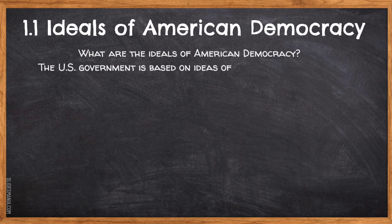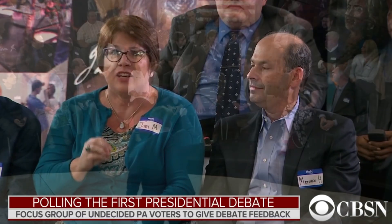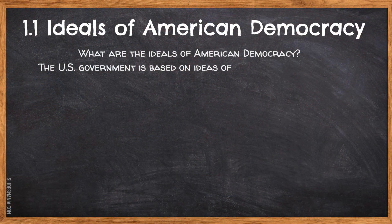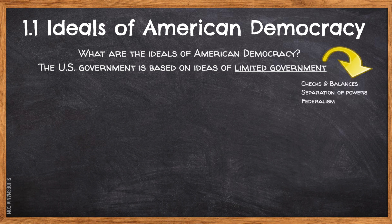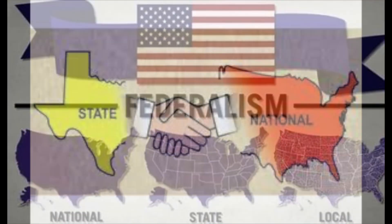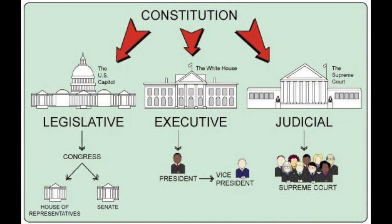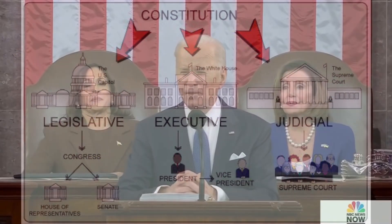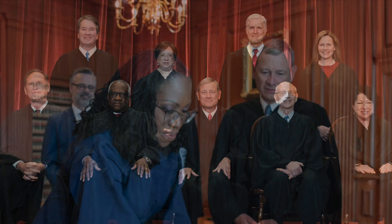So before we even begin a course on American government and politics, we have to understand: what are the ideals of American democracy? What is it that Americans fundamentally believe in? Well, the first thing is that the United States government is based on the idea of limited government — a system of separation of powers, with power divided between the federal and state governments, and a system of checks and balances, where government is divided into three competing branches: the legislative branch that writes the laws, the executive branch that enforces the laws, and the judiciary branch that interprets the laws.